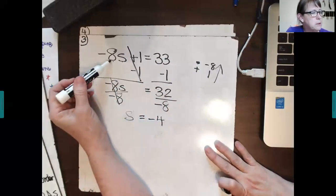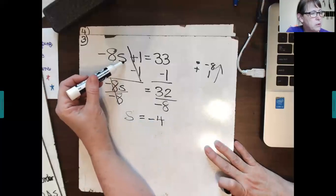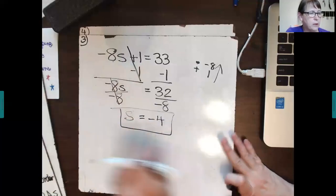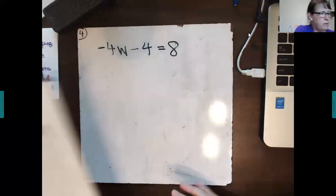S equals 32 divided by negative 8 is a negative 4. If you were to plug this back in right here, substituting, you'd find out that negative 8 times negative 4 is 32 plus 1 is 33. You have a correct solution. Very good.